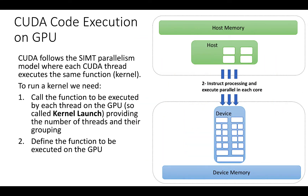In the GPU architecture slides we learned that CUDA follows the SIMT paradigm. In the SIMT model, each CUDA thread executes the same function, what CUDA calls a kernel. In order to run a kernel on CUDA threads we need two things. First, in the main function and program we call the function to be executed by each thread. This invocation is called kernel launch, and with it we need to provide a number of threads and their grouping.